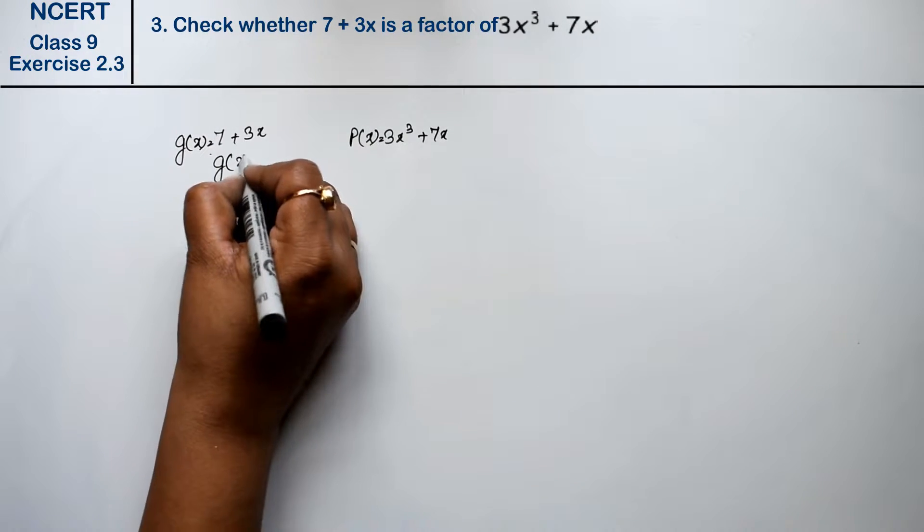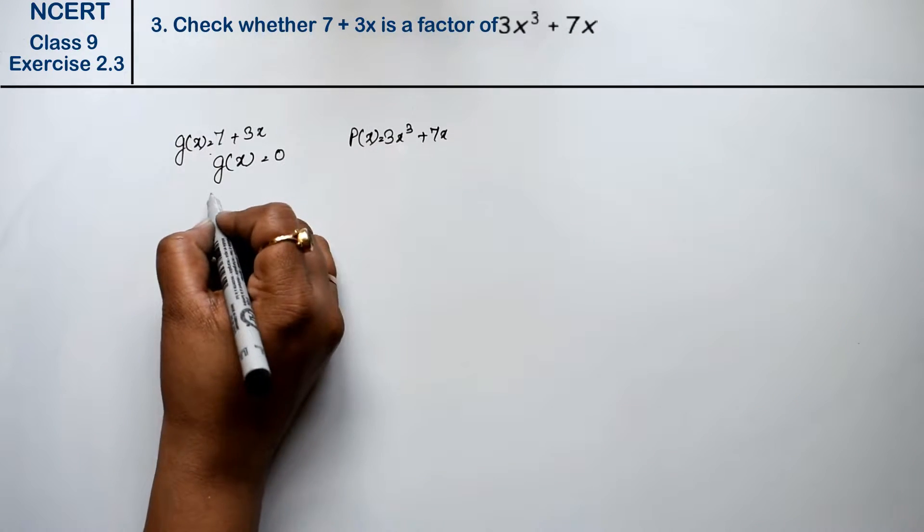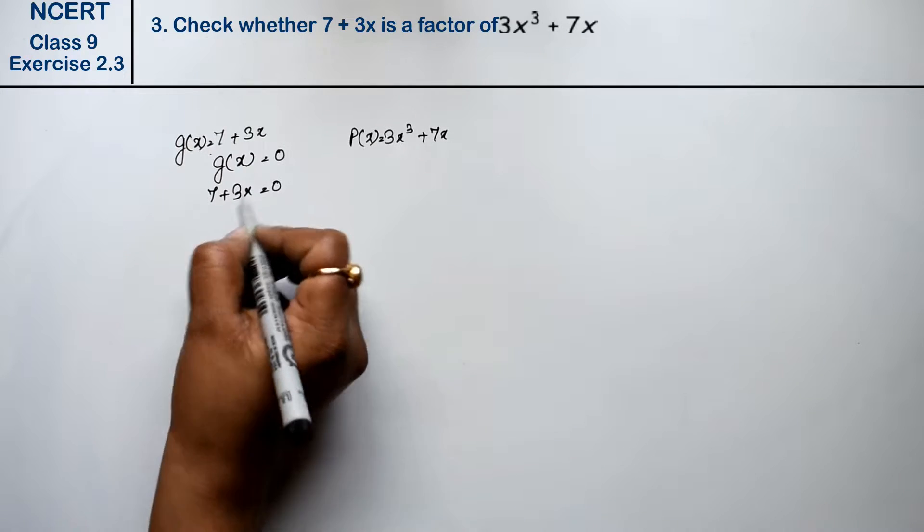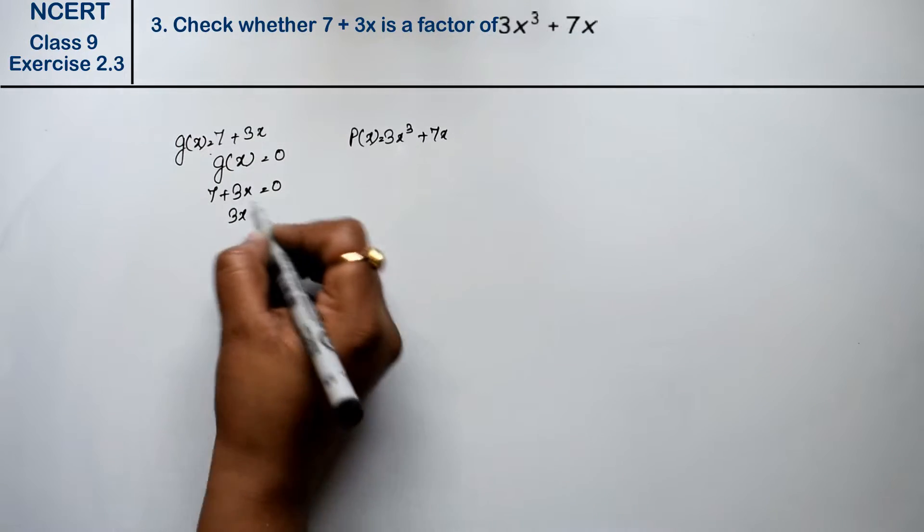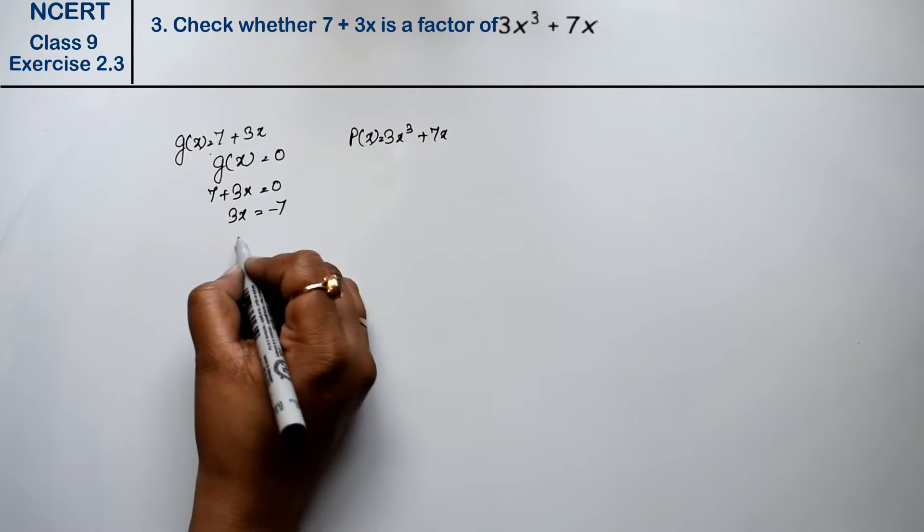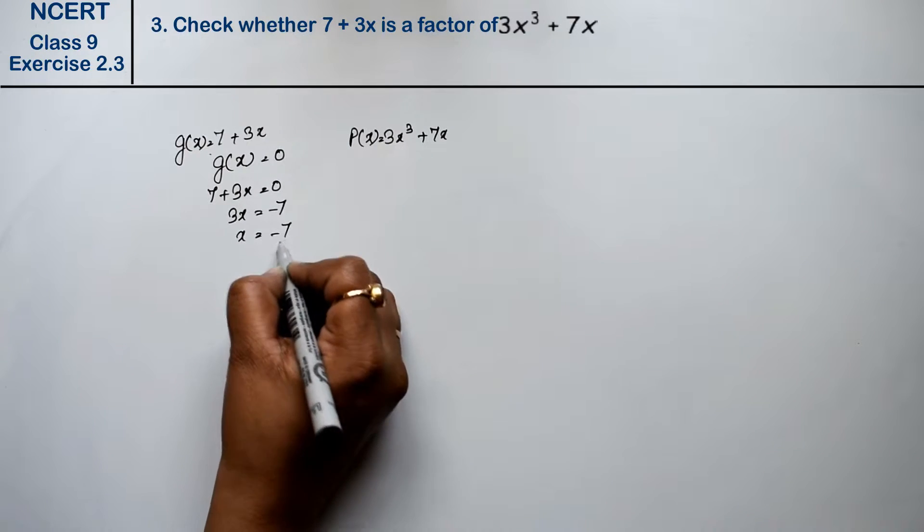First, we will keep g(x) equal to 0. What is this? 7 plus 3x equals to 0. 3x remains in its place, 7 comes to this side, so it becomes minus 7. What is the value of x? Minus 7 upon 3.